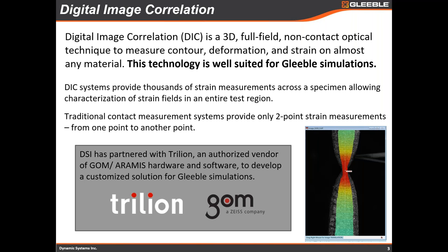I'll start with a general overview. Most people here are probably at least familiar with digital image correlation. Just to give a definition, it's a full-field, non-contact optical technique to measure contour, deformation, and strain. This technology is really well-suited for Gleeble simulations. A lot of times we use contact extensometers or measure between two points. With DIC, you can look at thousands of points and how they all interact. We're happy to work with Trillian. Most people are familiar with GOM and the Aramis system, and Trillian has been a great partner.